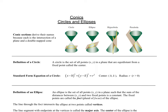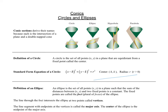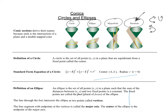Our next unit is going to be on conics. Conics include circles, ellipses, hyperbolas, and parabolas. We've already seen parabolas before, but now we're going to look at parabolas that could go to the right and to the left, as well as upwards or pointing downwards, and we're going to define them geometrically.